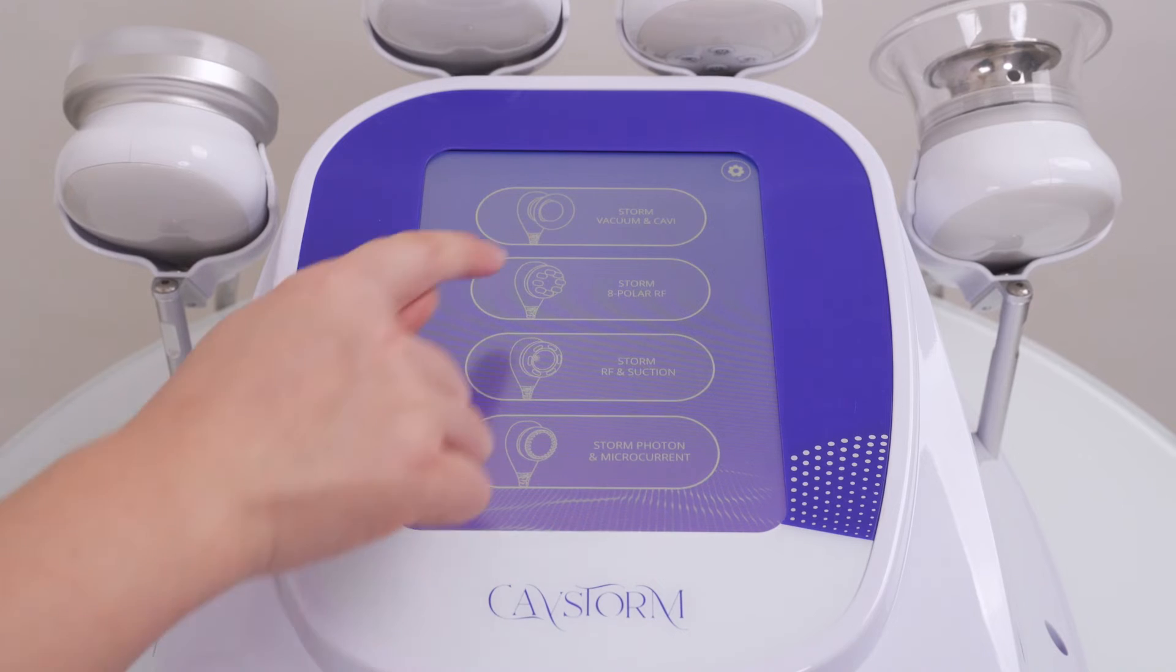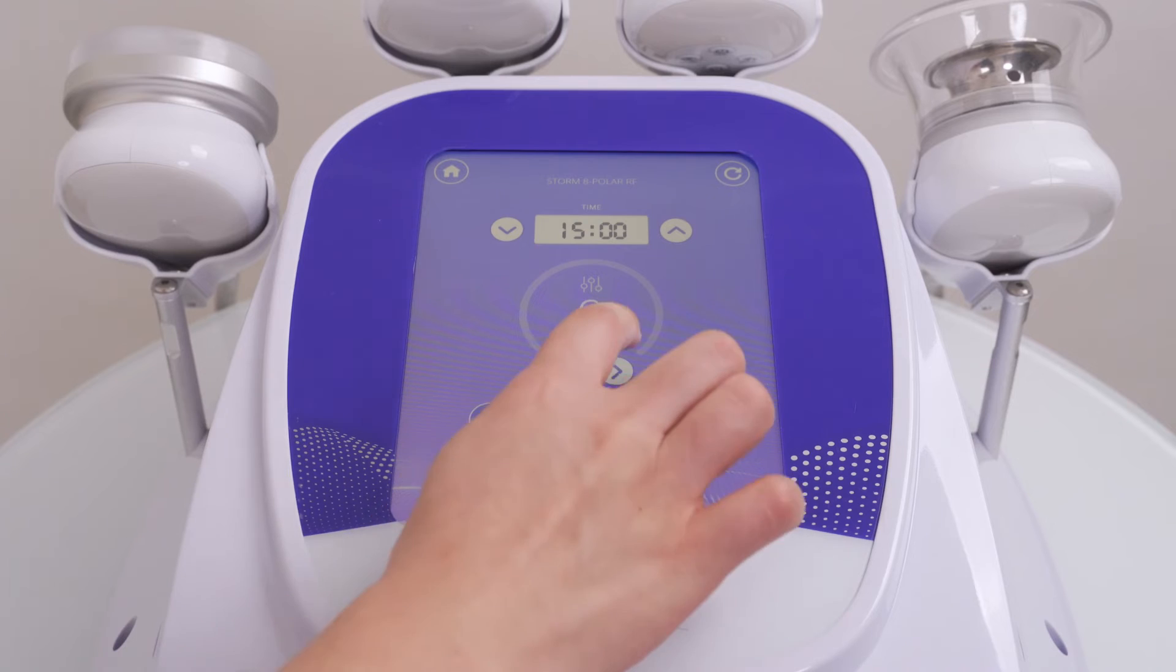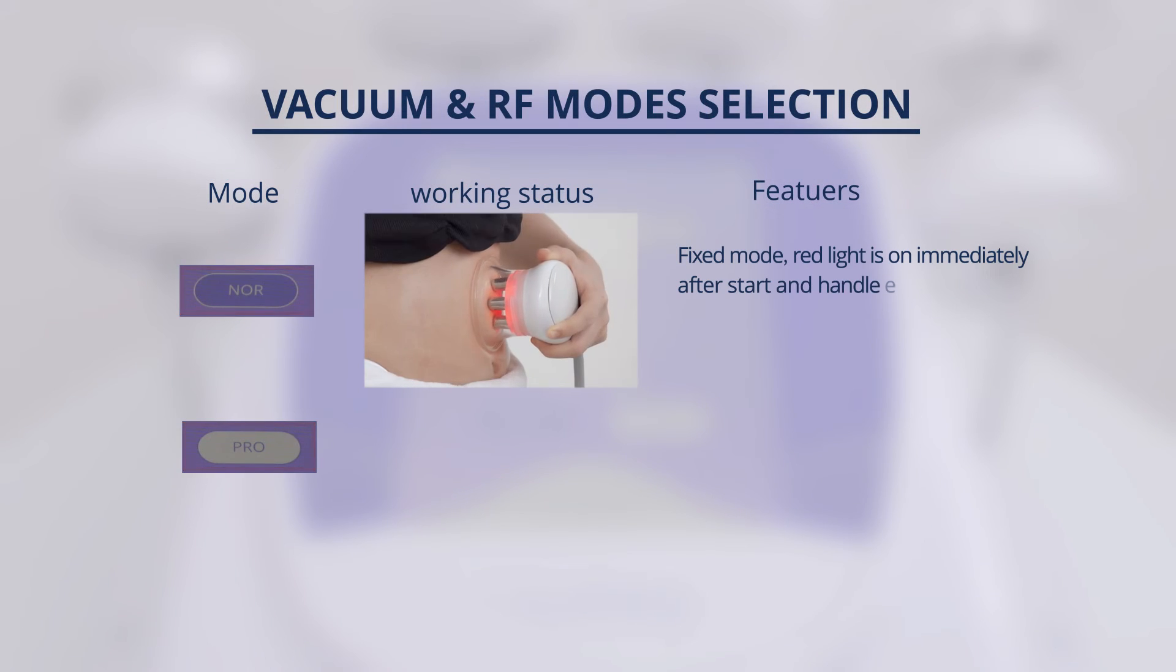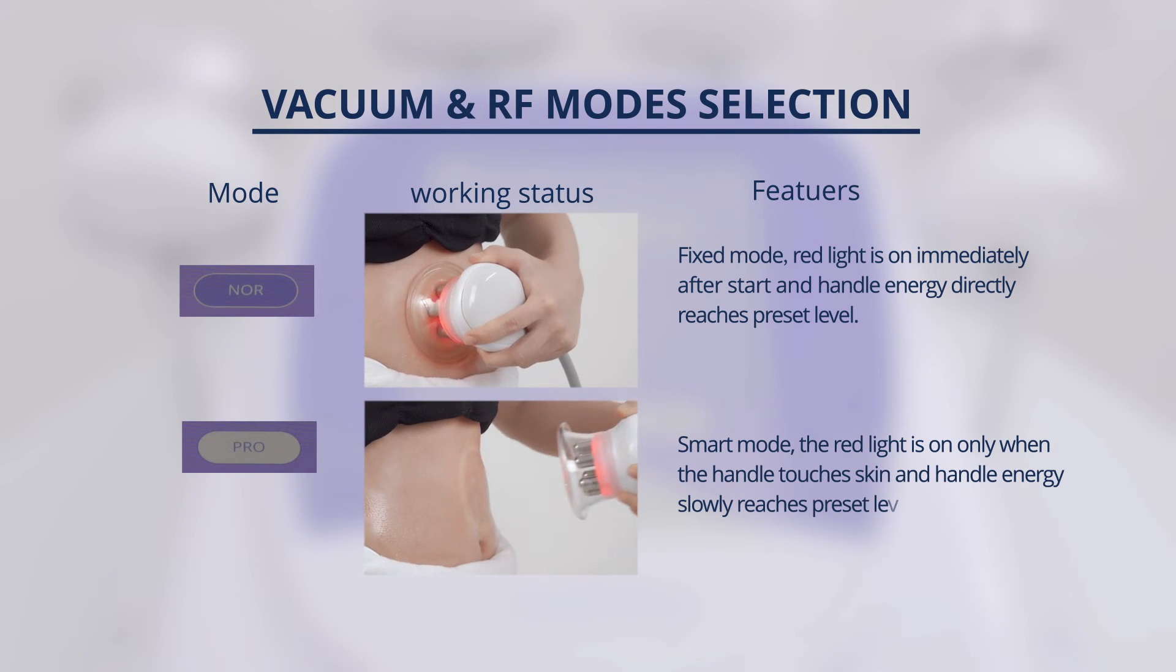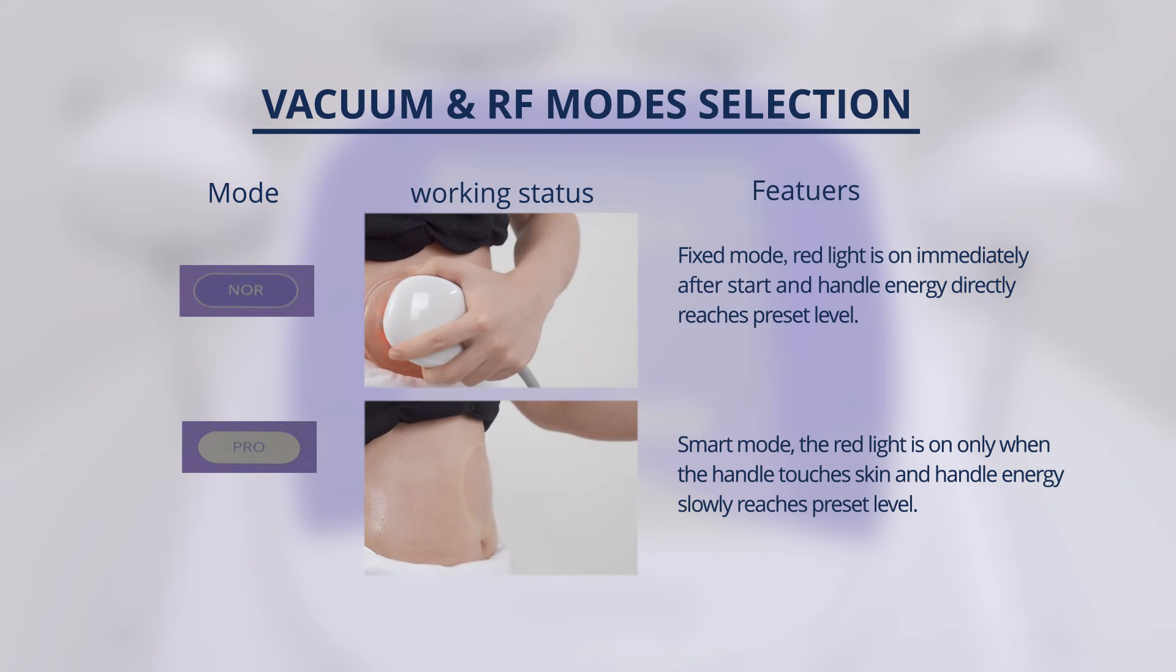Press the Storm 8-polar RF function button. Set time at 15 minutes and NS level at 2 to 7. For mode selection: Normal mode means the handpiece directly reaches preset level after start button is pressed. Pro mode means the energy slowly reaches preset level after start button is pressed and the handpiece touches the skin.